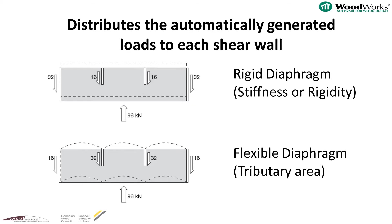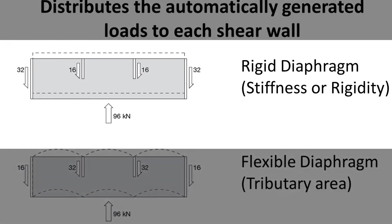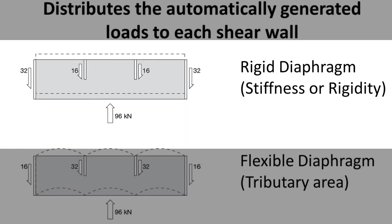The rigid distribution is shown in the top figure. The 96 kN is distributed based on stiffness or rigidity of the shear walls. Stiffness or rigidity depends on either the deflection of the walls or the relative capacity of the walls. Since the exterior walls are twice as long as the interior walls, they are twice as rigid, so they attract twice as much load when using rigid diaphragm distribution.